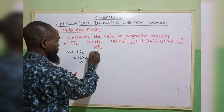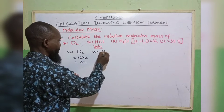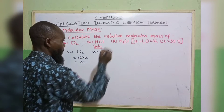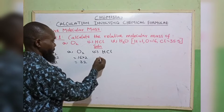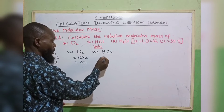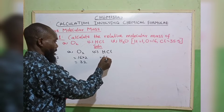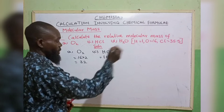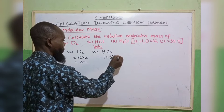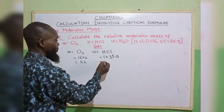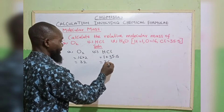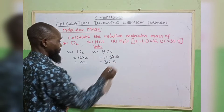The third one is HCl. The atomic mass of hydrogen is 1, plus chlorine which is 35.5. When we sum it up, we have 36.5.